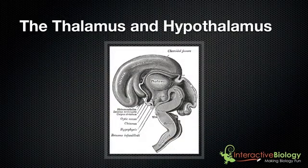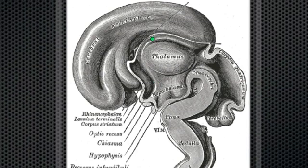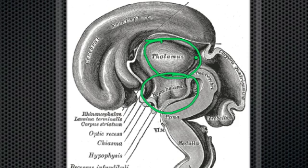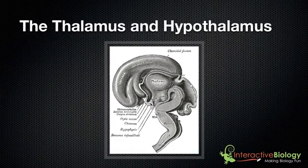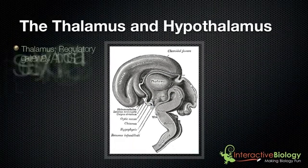So here, as you can see, we have this region here that's called the thalamus, and then right beneath that we have the hypothalamus. These are the two areas that we're going to talk about today, and what we're going to do is just look at the functions of those two areas.